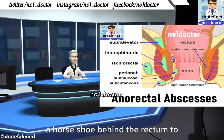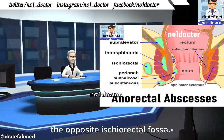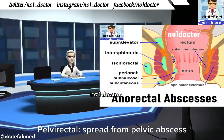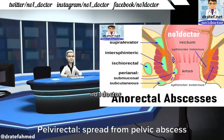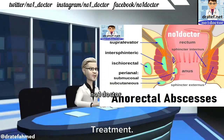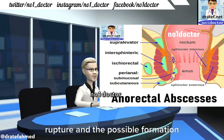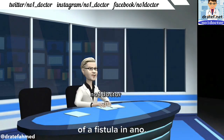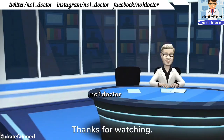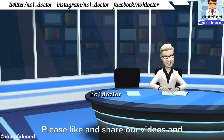Like a horseshoe behind the rectum to the opposite ischiorectal fossa. Pelvirectal spread from a pelvic abscess is rare. Treatment: early surgical drainage to prevent rupture and the possible formation of a fistula.